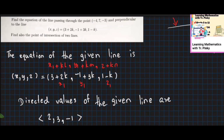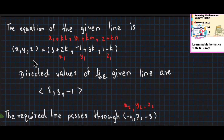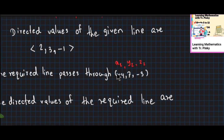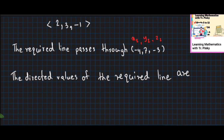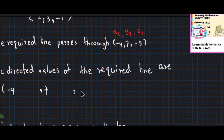We have H2, Y1, S1. We have H2, Y2, S2. This is H2, Y2, S1. H2 minus 4, Y2, S2 minus 3.